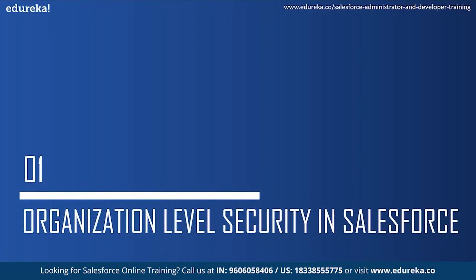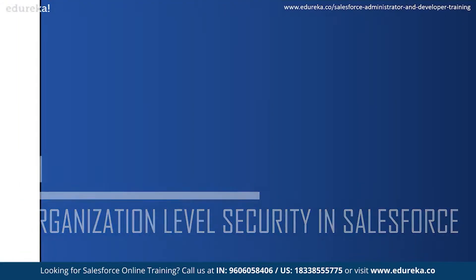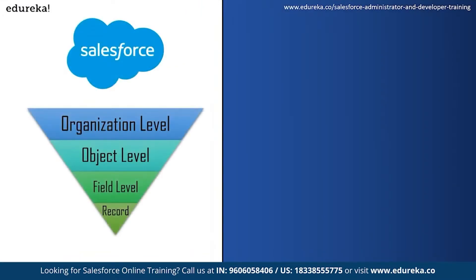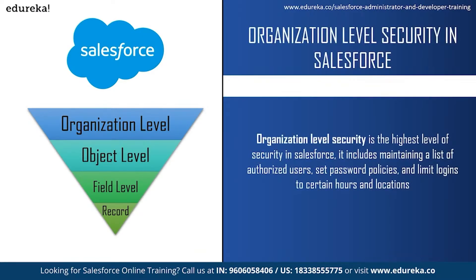Moving on to the first topic: organization level security in Salesforce. There are four levels of security in Salesforce — organization level, object level, field level, and record level security. Organization level security is the highest level. It includes maintaining a list of authorized users, setting password policies, and limiting logins to certain hours and locations. Key features include IP address restriction, password policies, and login access.